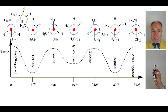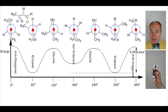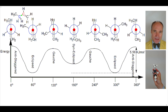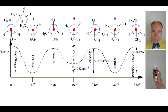The eclipsed conformation has the lowest energy of all the conformations, whilst the anti-staggered conformation has the highest energy, greater than the eclipsed conformation by 5.56 kilojoules per mole. Almost identical in energy to the anti-staggered conformation is the gauche conformation, having 5.52 kilojoules per mole more energy than the eclipsed form. The syn-eclipsed conformation has 2.0 kilojoules per mole more energy than the eclipsed conformation.